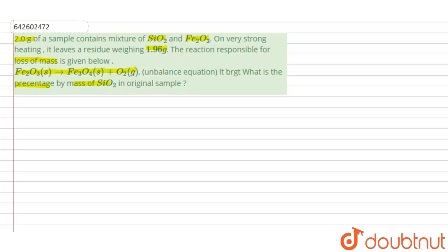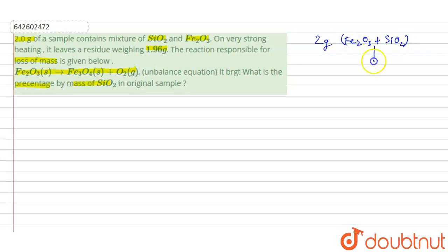According to the question, in the 2 gram sample of silica and Fe2O3, upon strong heating it leaves a residue of 1.96 grams. The reaction responsible for the loss of mass is the given reaction, and we have to calculate the percentage by mass of silica present in the sample.